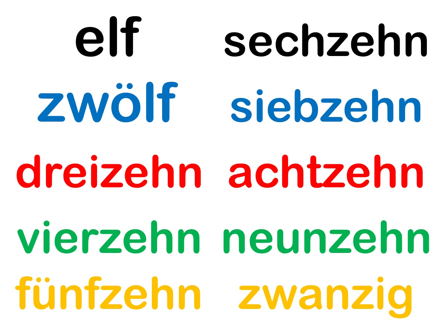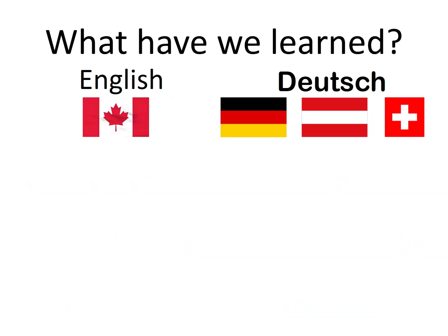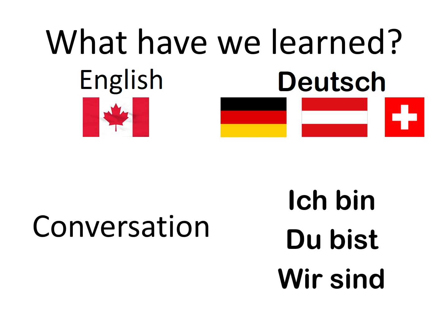Let's hope you all remember how to count from one to twenty in German. We also learned conversation words that mean things like I am, you are, or we are. We learned ich bin, which is I am; du bist, which is you are; and wir sind, which is we are. Let's try those words all together: Ich bin, du bist, wir sind.